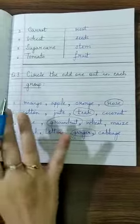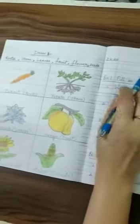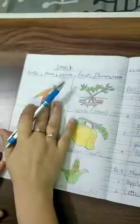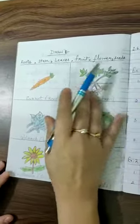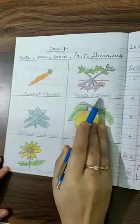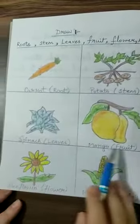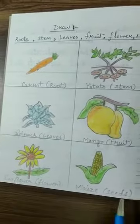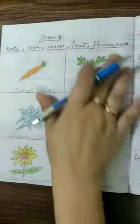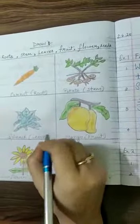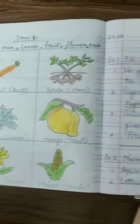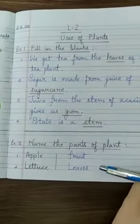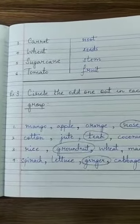So this is your work for today. You have to do this in two parts. And where you start lesson 2, on the plain side, you will make a diagram — draw the plant showing roots, stem, leaves, fruit, flower, and seeds. You will only use crayons or pencil colors — no sketch pens. Do the work very neatly with margins. Learn the work. Thank you.